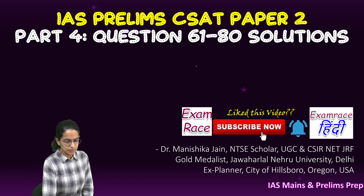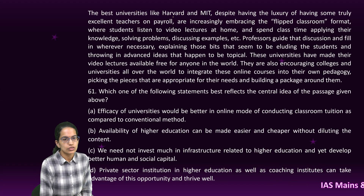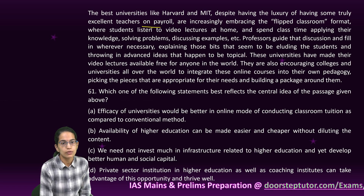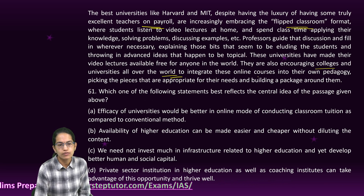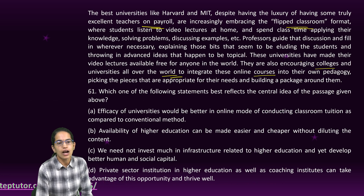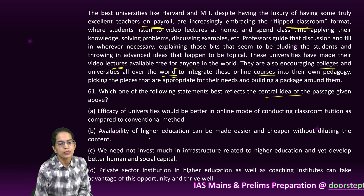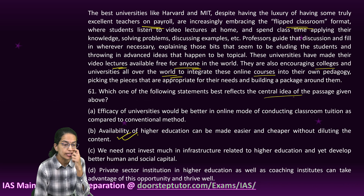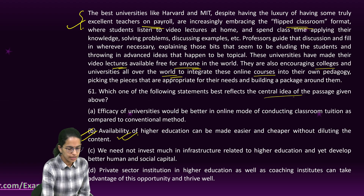Let's start with the final set for the CSET paper. The very first question is based on a passage about the best universities like Harvard and MIT, which despite having excellent teachers, are focusing more on the flipped classroom — encouraging students all over the world to integrate online courses and have video lectures available free for everyone. The central idea is that availability of higher education can be made easier and cheaper without diluting quality of content, so B is the right option.